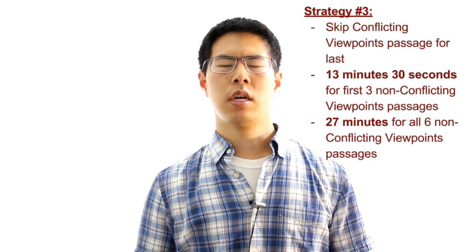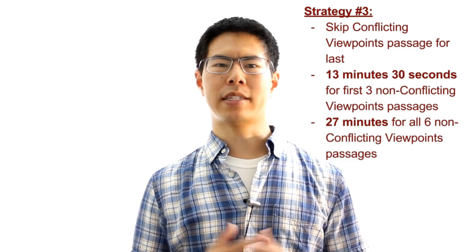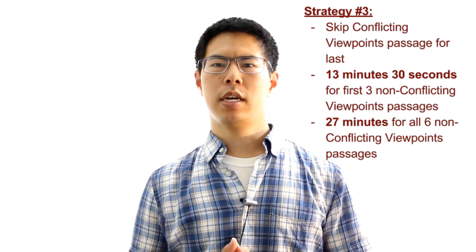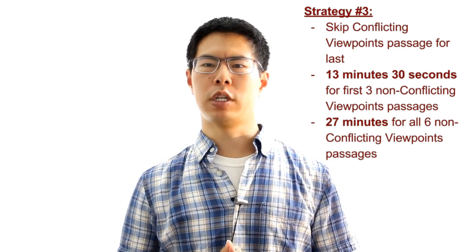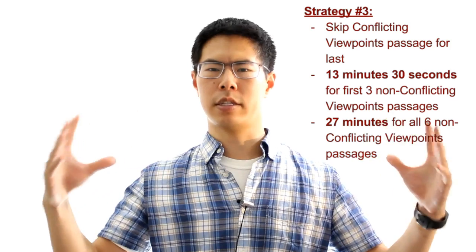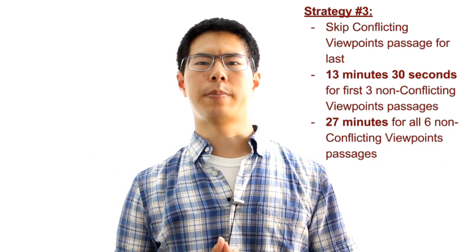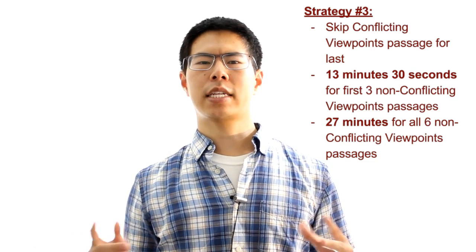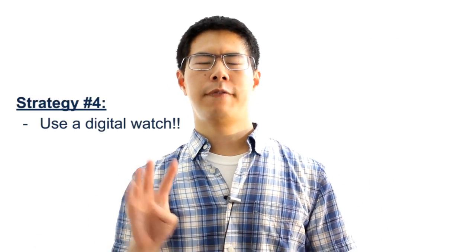Third — we'll talk about this more in a later video — you should skip the conflicting viewpoints passage to do last every time, wherever it shows up in the test. You should aim to finish the first three non-conflicting viewpoints passages in about 13 minutes 30 seconds, and the last three non-conflicting viewpoints passages in about 27 minutes. You'll then spend the next six-ish minutes on the conflicting viewpoints passage.